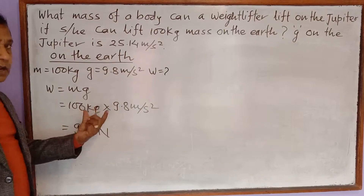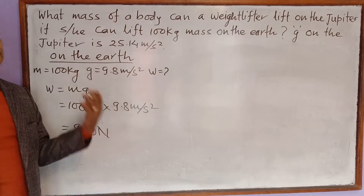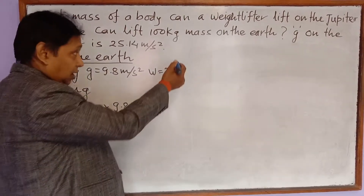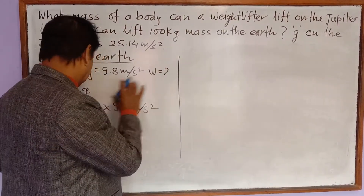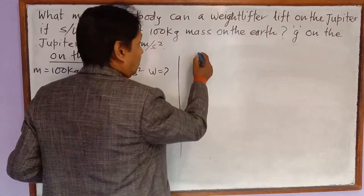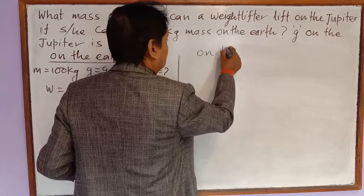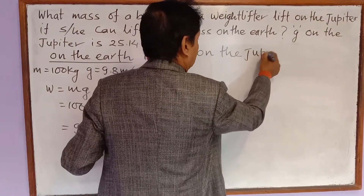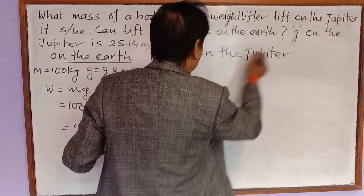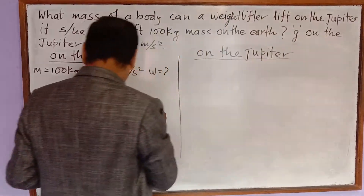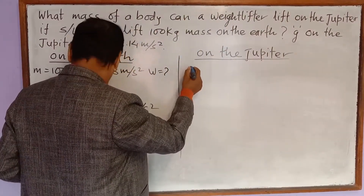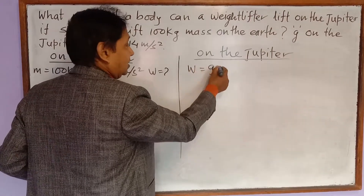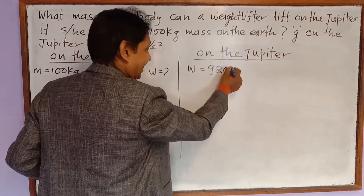It means he can apply 980 Newtons of force to lift a body. Now on Jupiter, he will also be able to apply the same 980 Newtons of force. So on Jupiter, he will apply 980 Newtons — this force means a weight of 980 Newtons is being lifted.